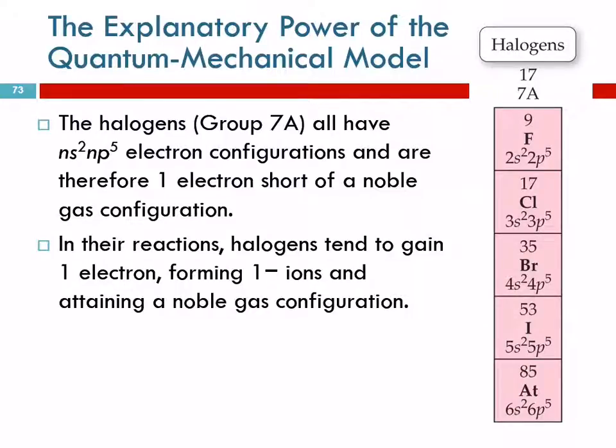What do they need to do to get an electron configuration like a noble gas? They could lose seven, or they could gain one, which is easier. Gain one. These guys all form negative one ions. That means they gain one electron. If they gain one electron, they can have a noble gas electron configuration. So they are also very reactive.